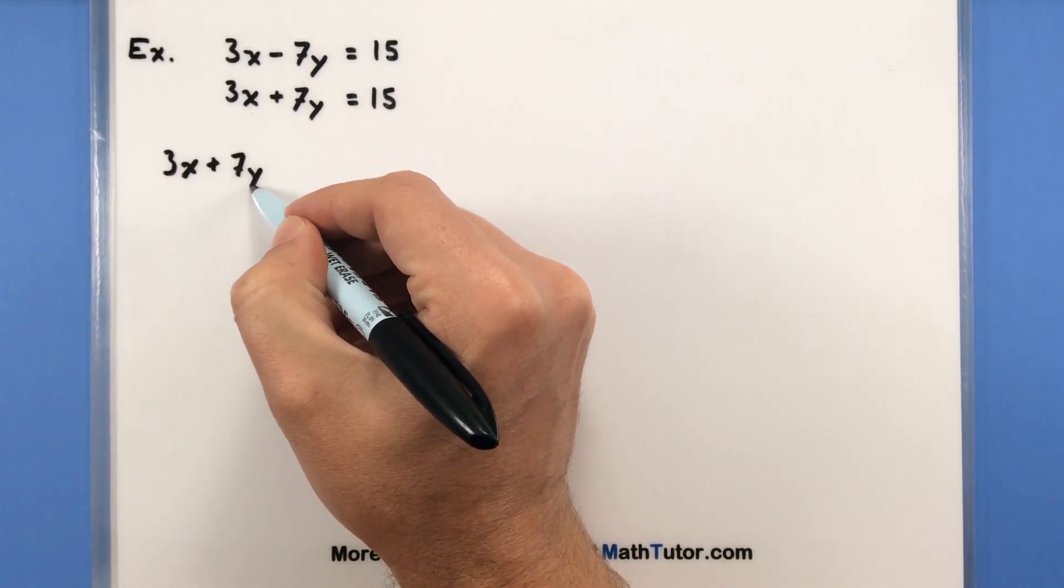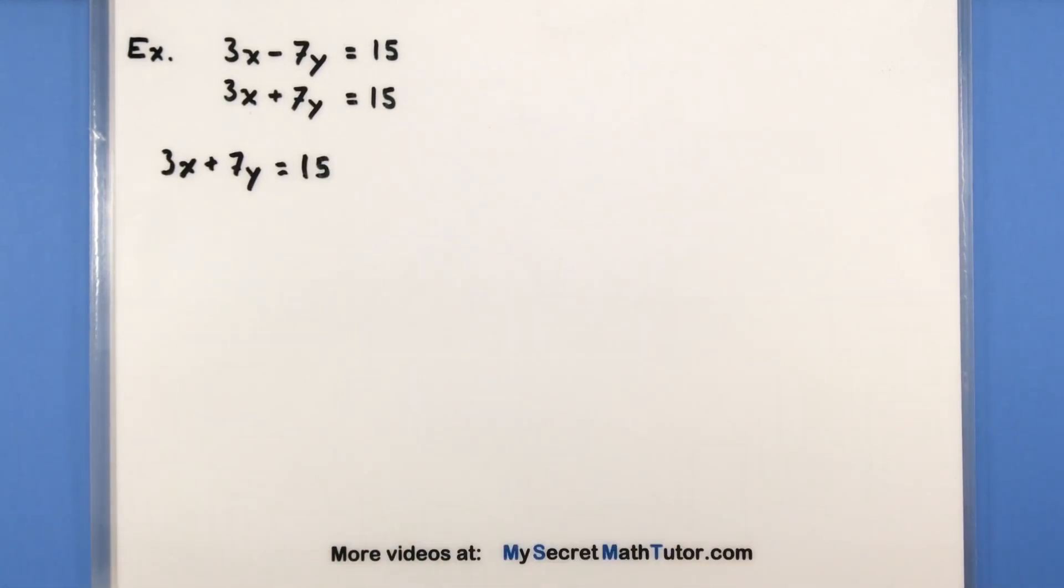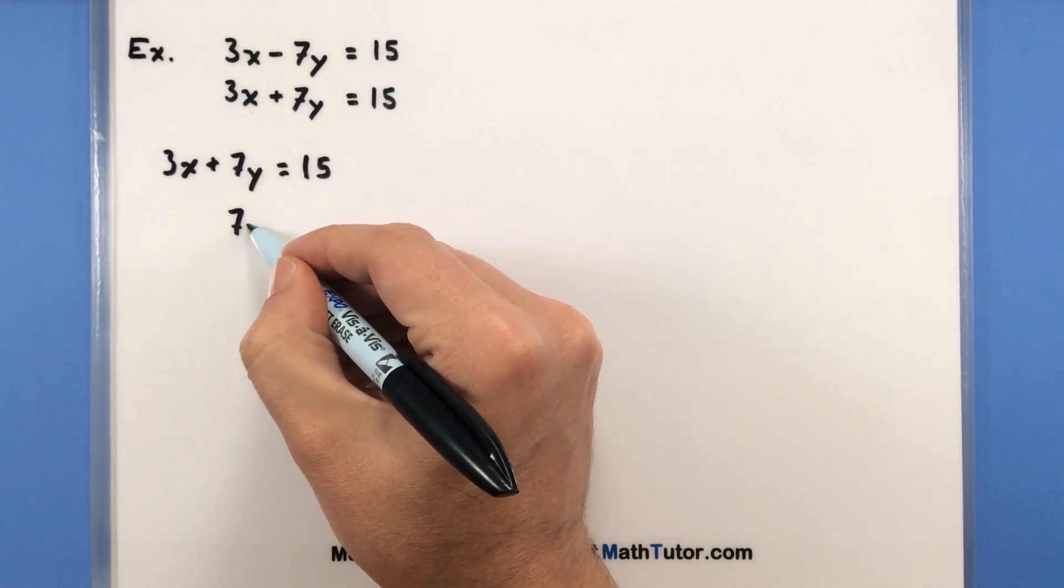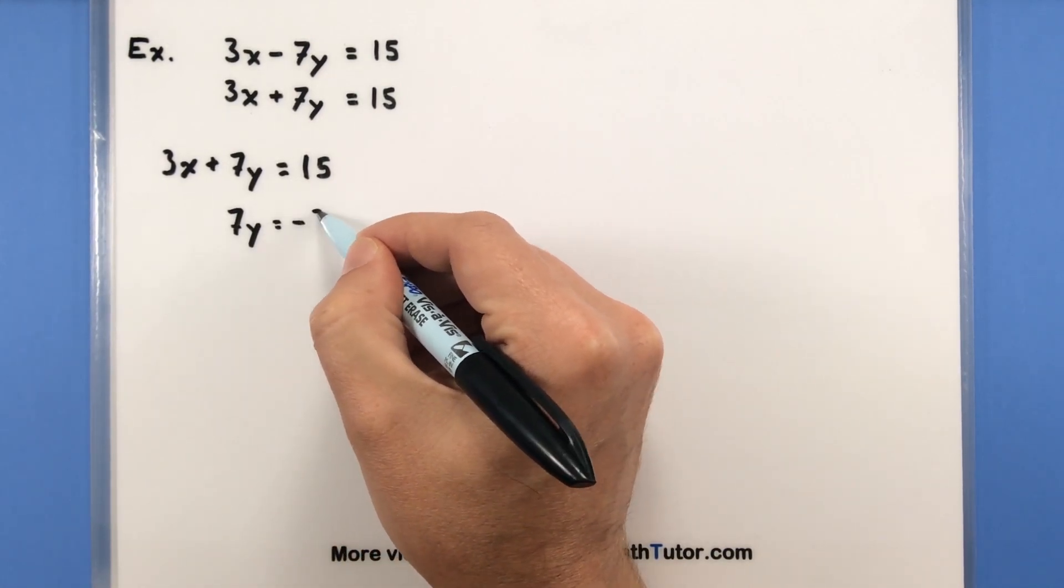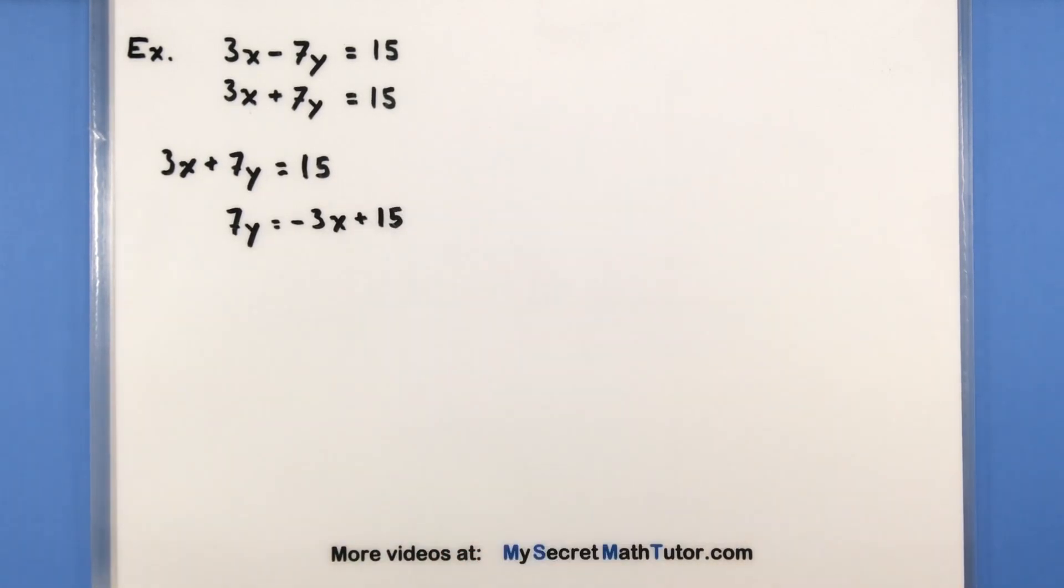And this time, let's go ahead and solve for y. No particular preference. You could solve for x if you want. Again, it doesn't matter. Let's see, if I'm going to solve for y, I should move the 3x to the other side, so there's a negative 3x. And then we'll go ahead and divide everything by 7.